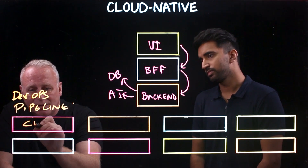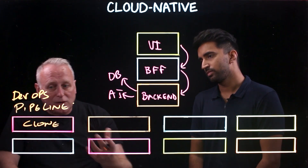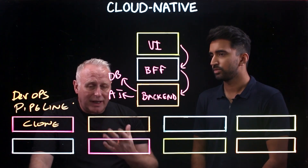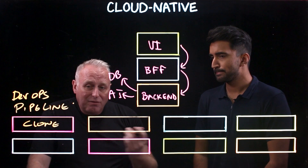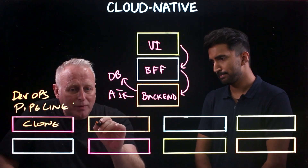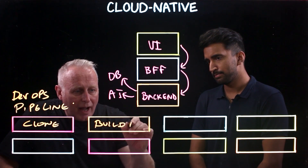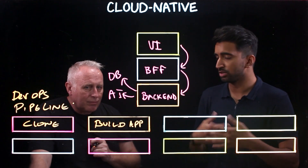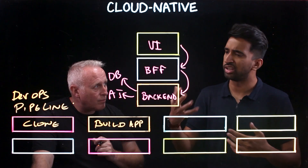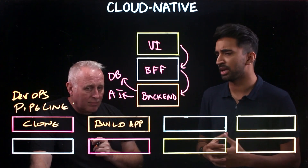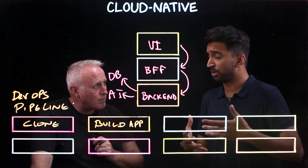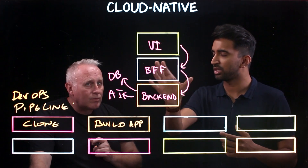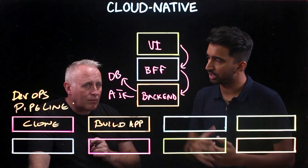Typically the first step is to clone the code from your source code management — which is usually Git-based technology like GitHub or GitLab — and then the first pipeline stage is to build the app. When you're building the application, you have considerations like Node.js with NPM, or Java. The pipeline is configured to build each component based on the programming language chosen.